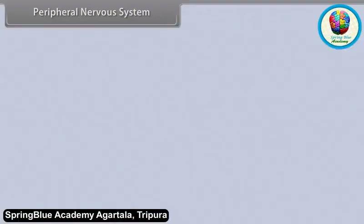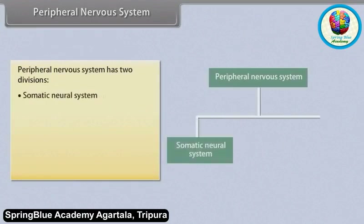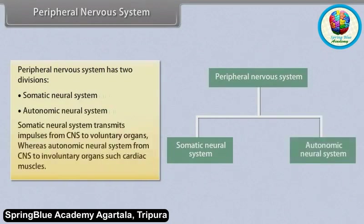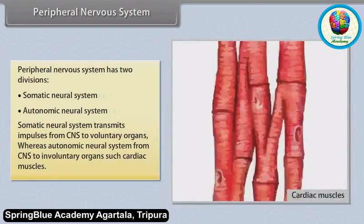The peripheral nervous system has two divisions: the somatic neural system and the autonomic neural system. The somatic neural system transmits impulses from CNS to voluntary organs, whereas the autonomic neural system transmits from CNS to involuntary organs, such as cardiac muscles.